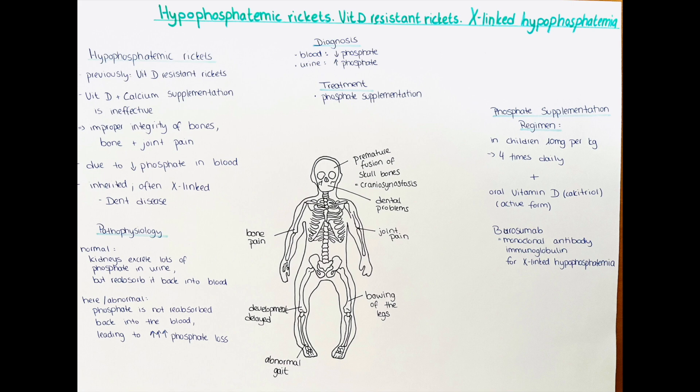Also important to mention is that some children may have premature fusion of the skull bones, which is also referred to as craniosynostosis. Lastly, dental problems such as dental abscesses or abnormal teeth formation have been more frequently reported in patients with hypophosphatemic rickets.